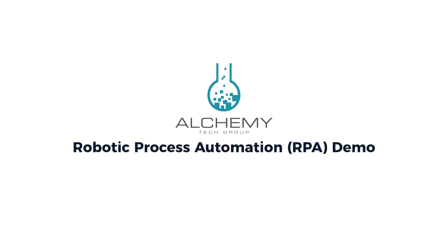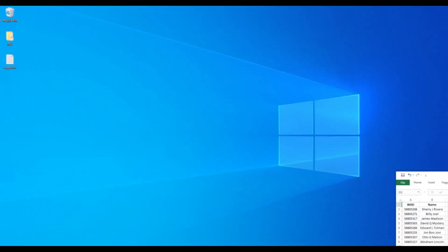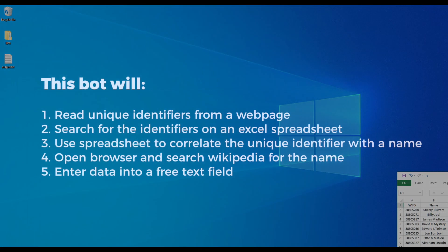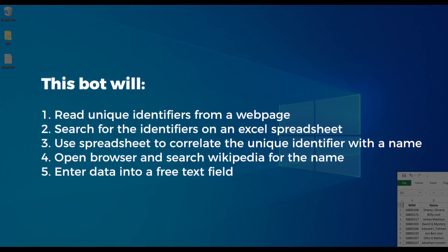Today we're going to be looking at an example use case for UiPath's robotic process automation tool. In this example, we'll be reading some unique identifiers off a web page, searching for them in an Excel spreadsheet, and then using that spreadsheet to correlate that unique identifier with a specific name.